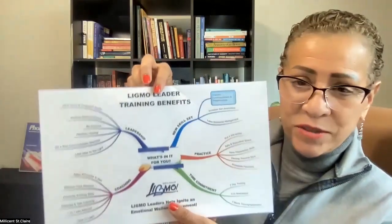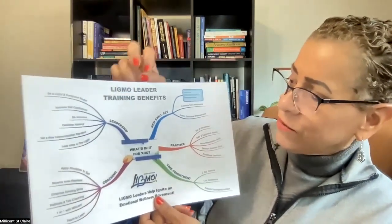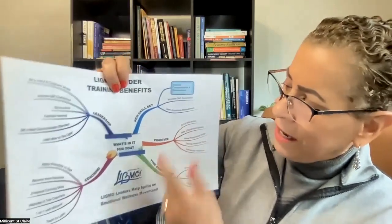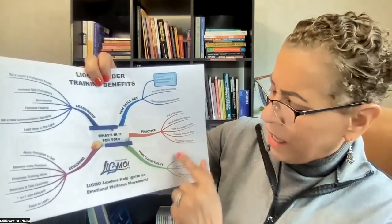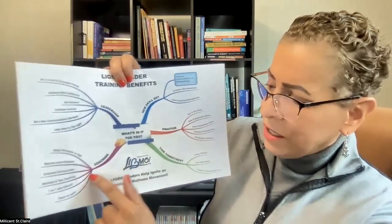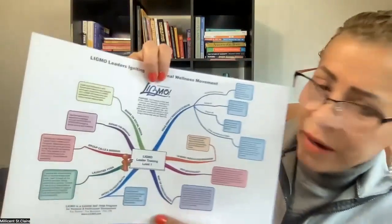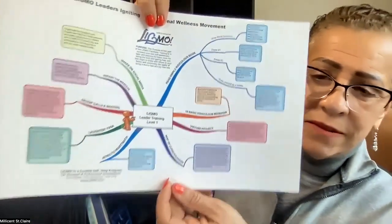Here is a map of a program I have called LIGMA — which means 'Let It Go, Move On.' For new trainers and facilitators I was teaching, I laid out the benefits: you'll develop a skill set, put it into practice, make a time commitment, learn how to become a more effective coach, and develop leadership skills. And here's a much more detailed map of the training and what it consists of — neat and comprehensive for someone else involved in the process.